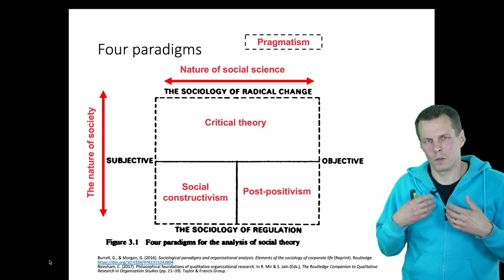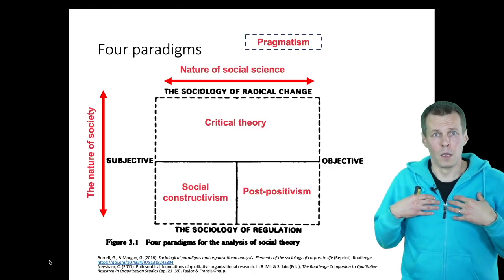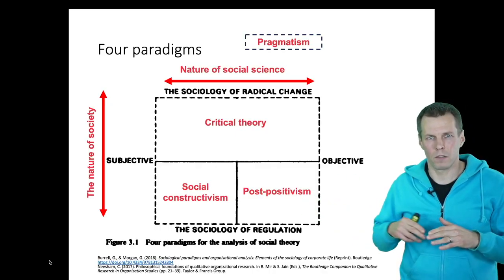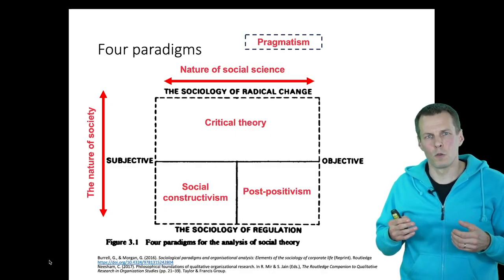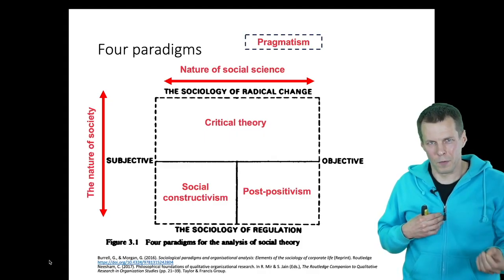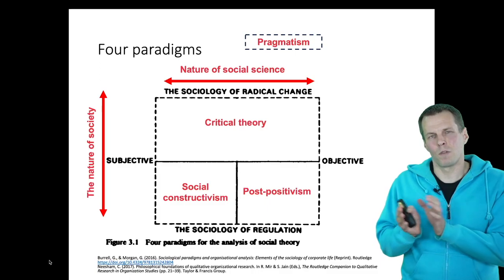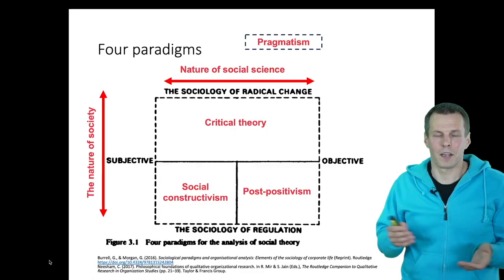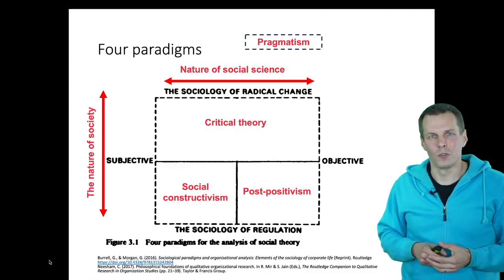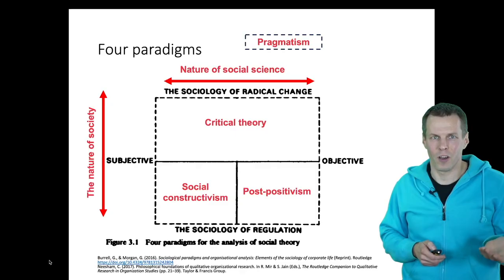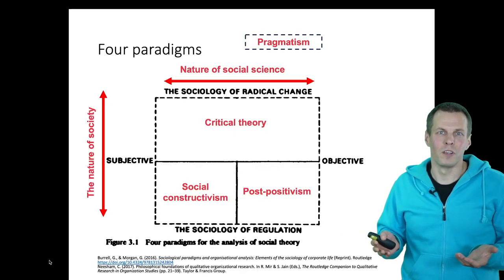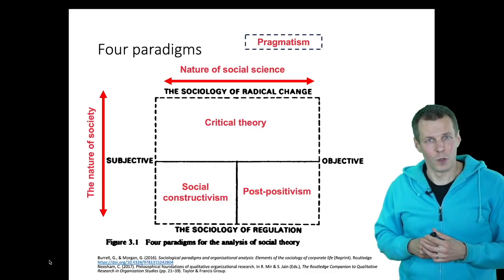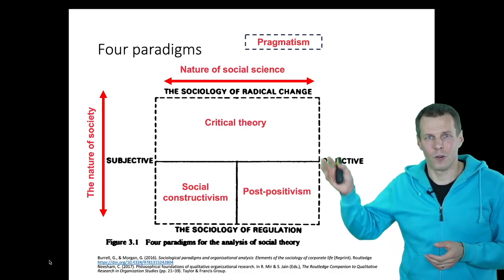This is best understood with an example. If we have a belief that birds flying low bring rain, that is of course not causally true, but it used to be a useful thing to believe because it allows you to predict rain. Rain is related to atmospheric pressure, and when pressure changes, birds vary how high they fly — this allowed people hundreds of years ago to predict short-term weather patterns and know when to get shelter. That was clearly useful even if it was not correct. Pragmatism focuses on that kind of useful knowledge instead of trying to discover truth in the way these other paradigms would.